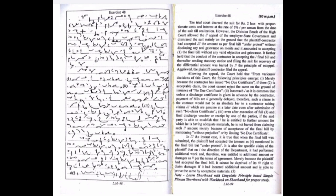The trial court decreed the suit for rupees 2 lakhs with proportionate costs and interest at the rate of 6% per annum from the date of the suit till realization. However, the division bench of the high court allowed the appeal of the employer state government and dismissed the suit, mainly on the ground that the plaintiff contractor had accepted the amount as per final bill under protest without disclosing any real grievance on merits, and it amounted to accepting the final bill without any valid objection and grievance.